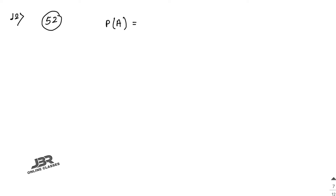Now moving on to sum number 12. A card is drawn from a well-shuffled pack of playing cards. What is the probability that it is either a spade or an ace or both? Total number of cards = 52. The first event A is getting a spade — there are 13 spade cards out of 52, so P(A) = 1/4.